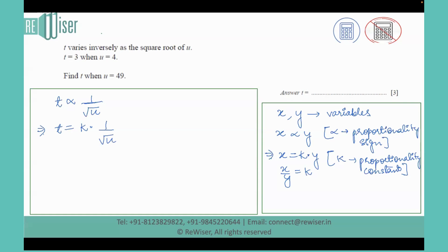Now we are going to find the value of k when t is given as 3 when u is 4. So when u is 4, we write t as 3, so we can say that 3 equals k times 1 over square root of 4, which will give us 3 equals k times 1 over 2, and the value of k is 2 times 3, and that is 6.